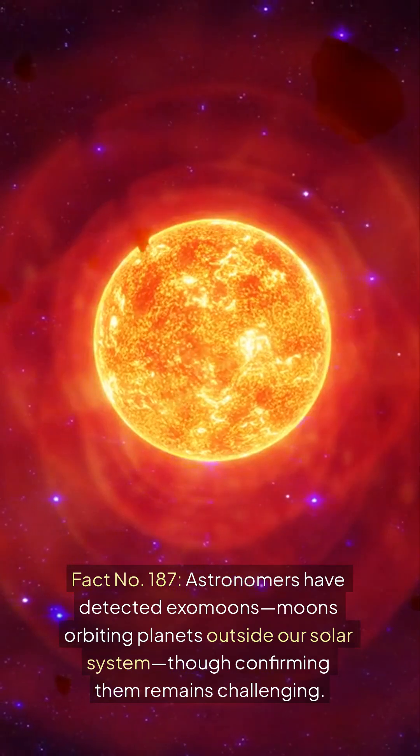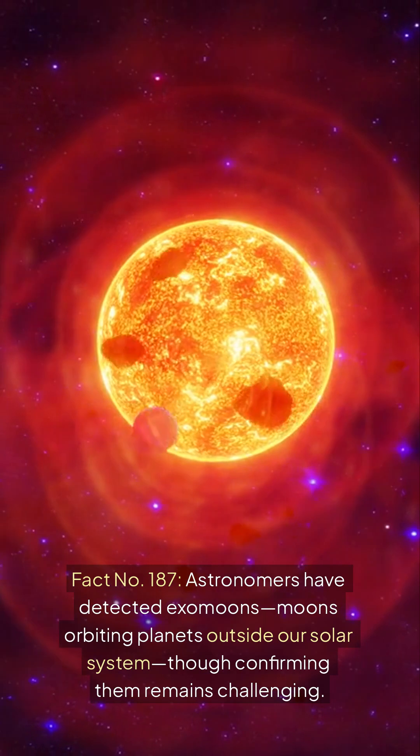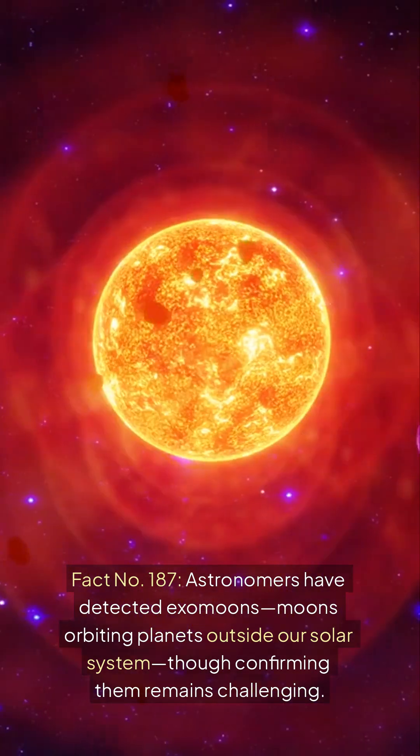Fact number 187, astronomers have detected exomoons, moons orbiting planets outside our solar system, though confirming them remains challenging.